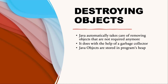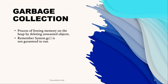Garbage collection refers to the process of automatically freeing memory on the heap by deleting objects that are no longer reachable in your program. There are many different algorithms for garbage collection, but you don't need to know any of them for the exam. What you do need to know is that the system.gc method is not guaranteed to run, and you should be able to recognize when objects become eligible for garbage collection. That is the most important thing to remember.